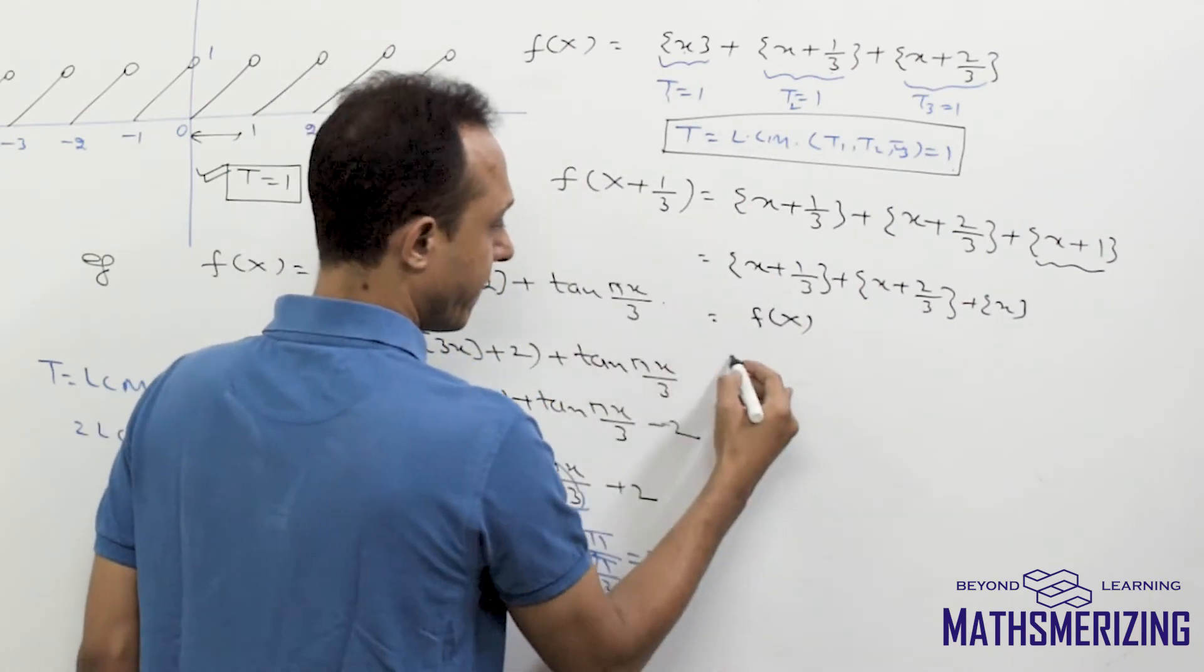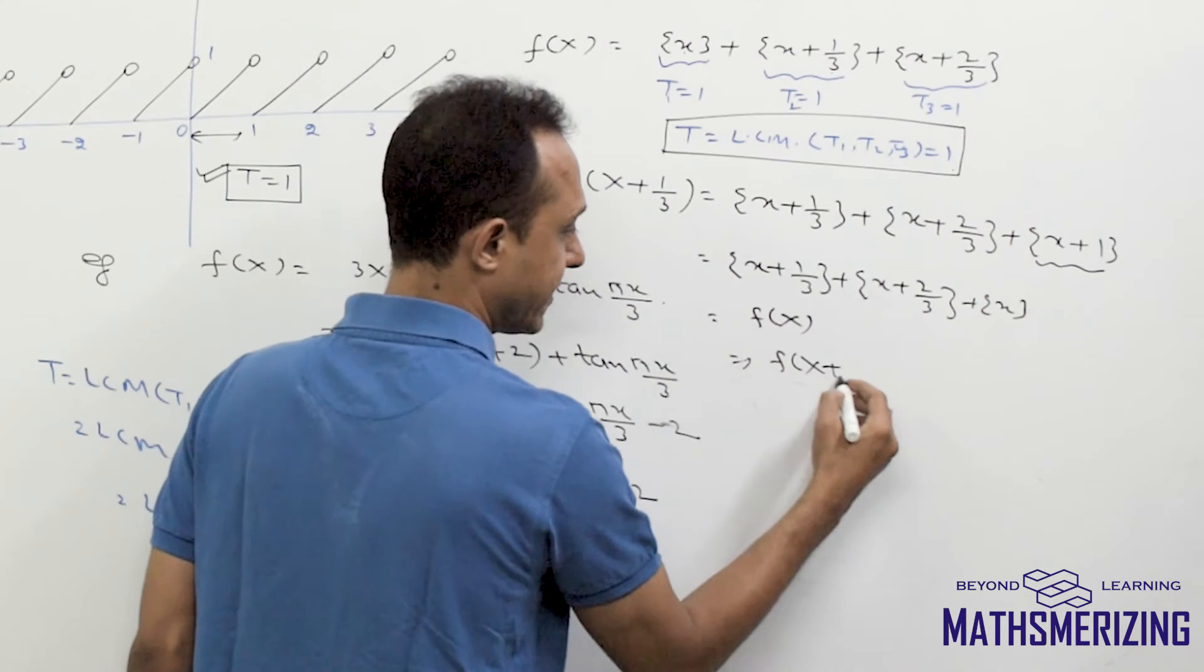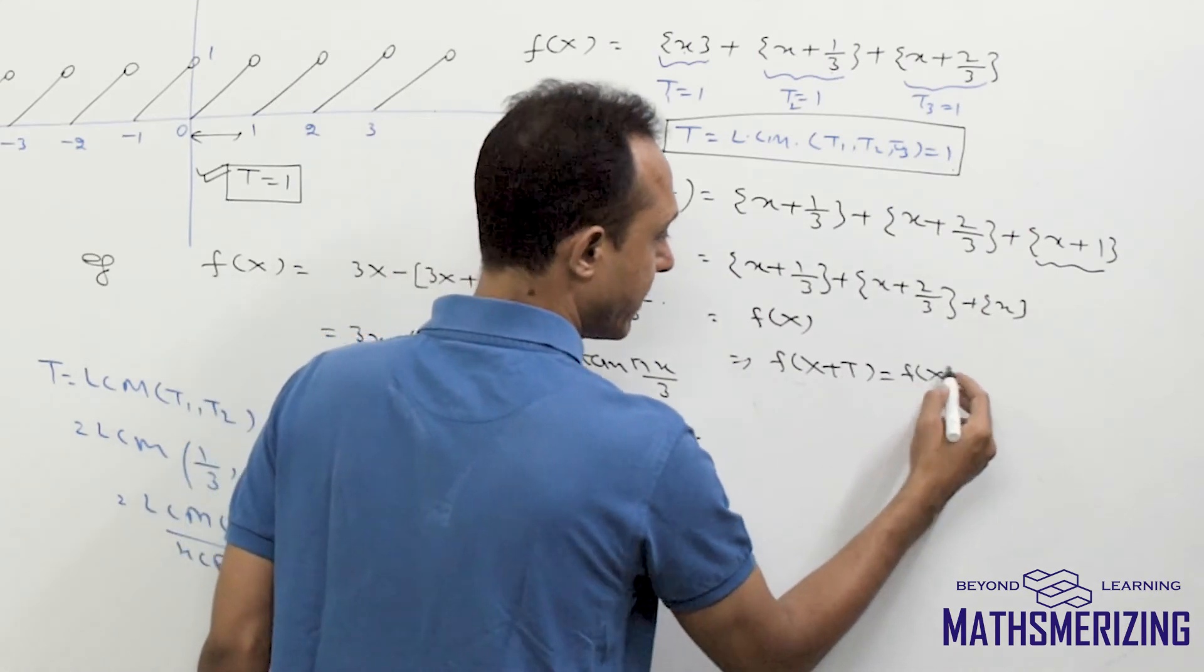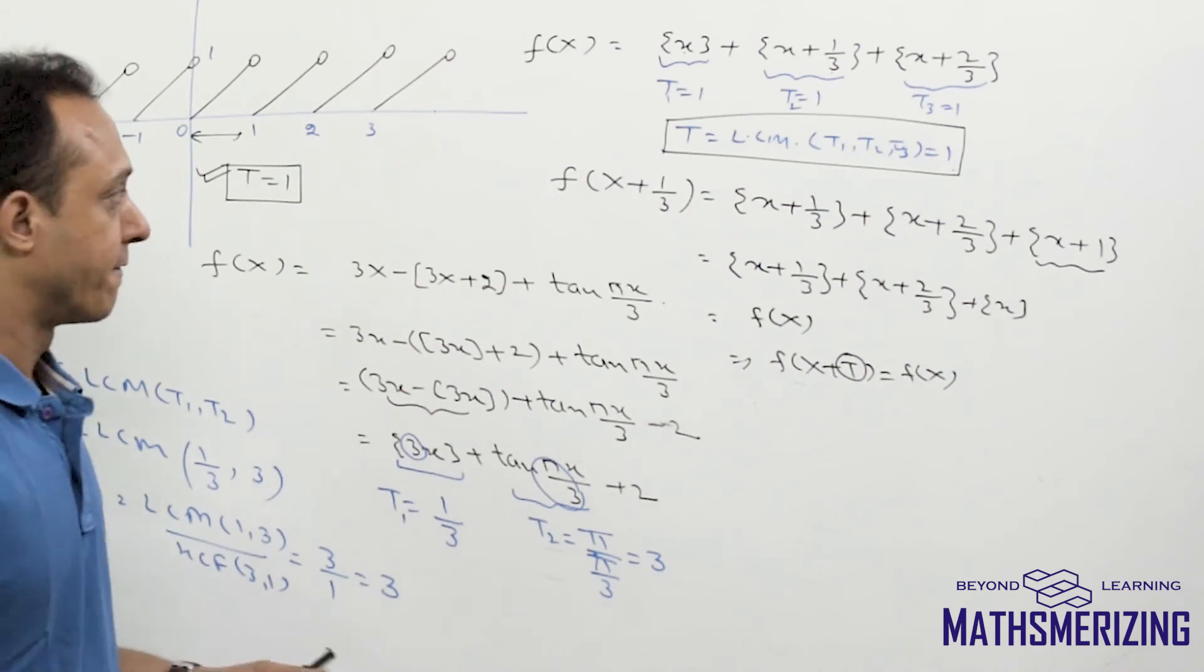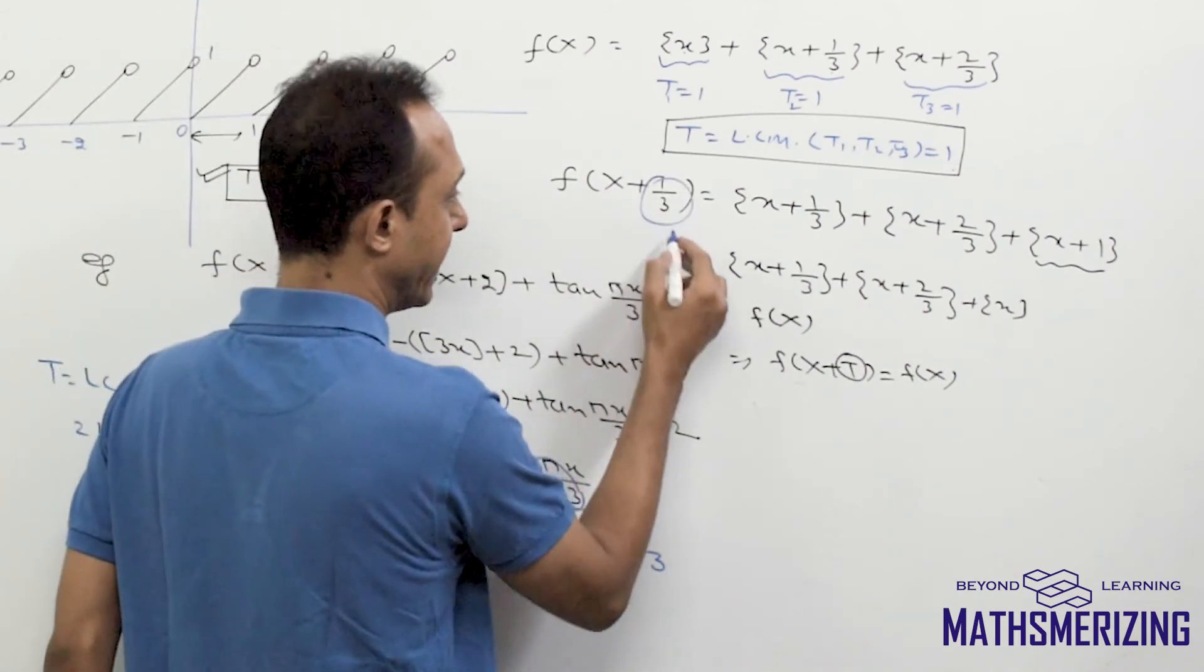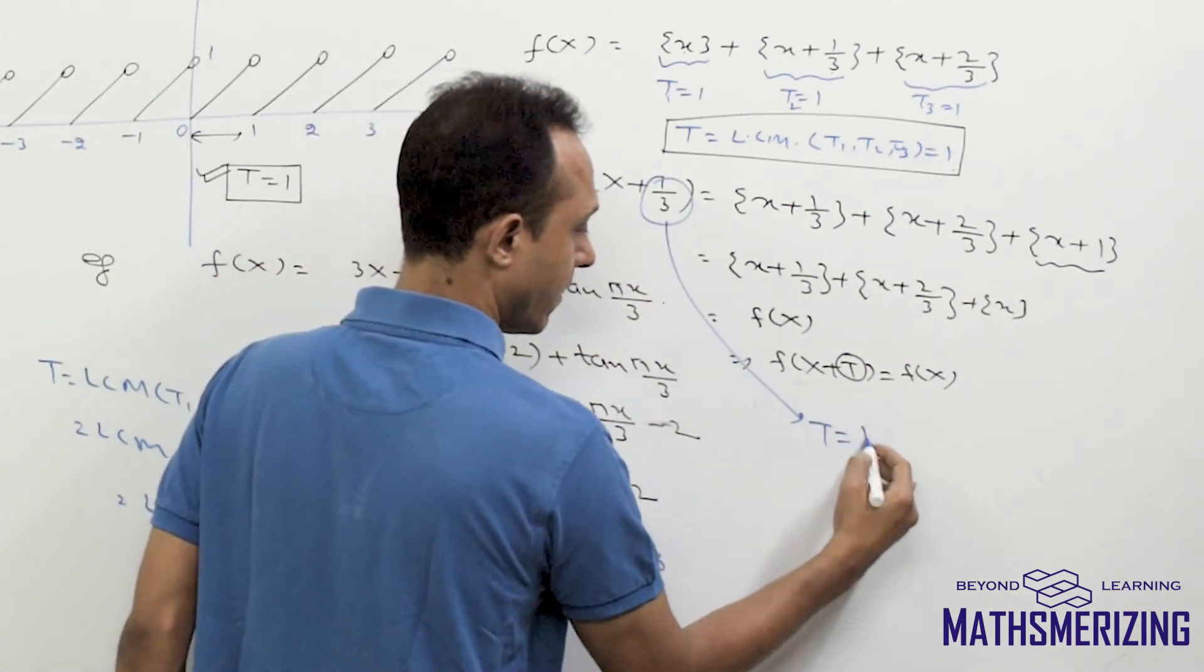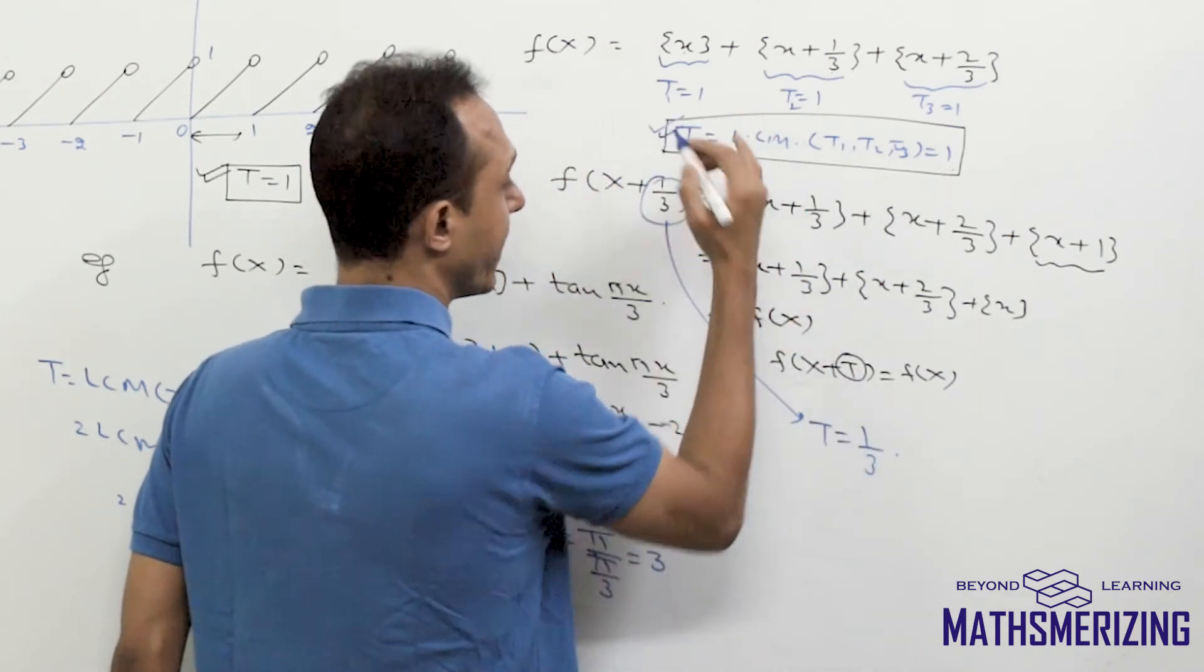Now when we know f(x) plus t is equal to f(x), then t is a period of this given function f. Now in this case, the value of t that I'm getting is 1 by 3, which is less than 1.